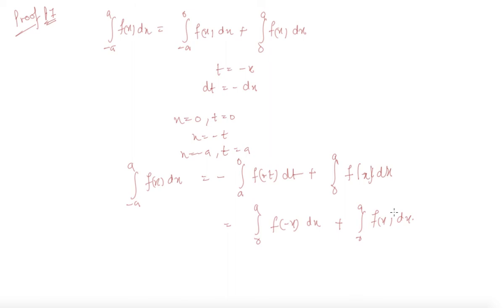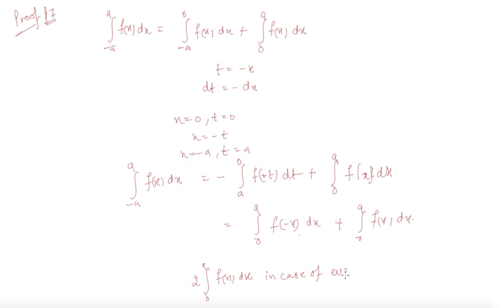So, if f is an odd function, f(minus x) becomes minus f(x), and the two integrals cancel out, giving a result of 0. If it is an even function, then f(minus x) equals f(x), and the result becomes 2 times the integral from 0 to a of f(x) dx. So the answer is 2 times 0 to a of f(x) dx in case of even, or 0 in case of odd.